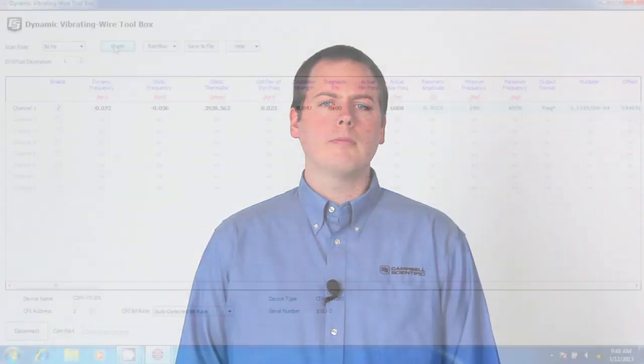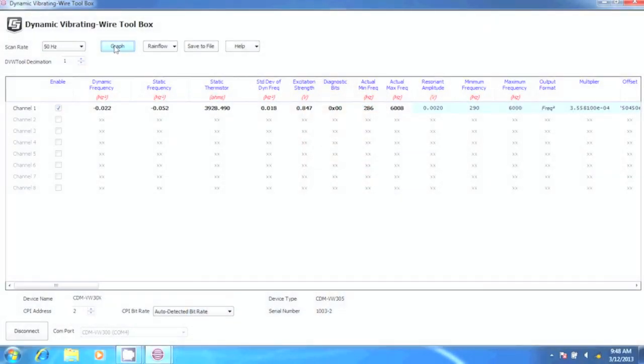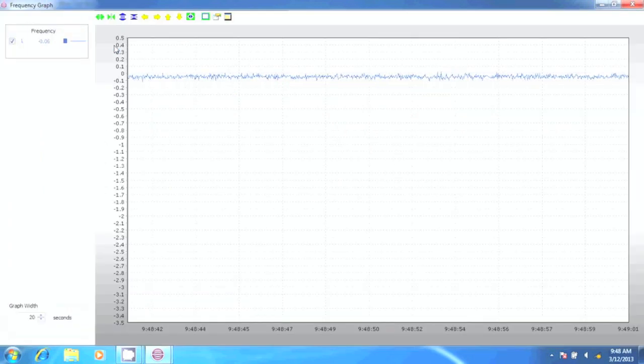Now let's look at the data streaming from the CDM VW300. The data is streaming directly to the PC via the USB port on the device. The program that is reading and displaying this data is DVW Toolbox. This is a free, application-specific software tool designed for demonstration and evaluation of the dynamic vibrating wire interface. The vertical units on this graph are in microstrain and the graph is scaled to show four microstrain overall.